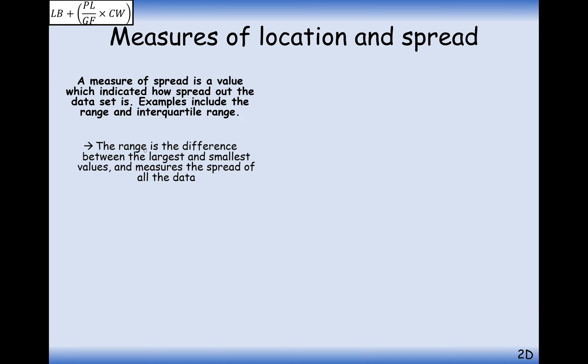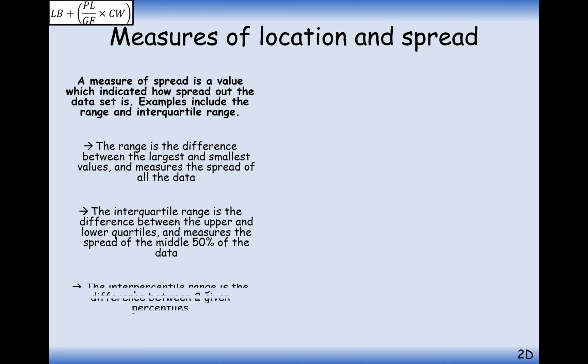So just to go through the basics here, the range is the difference between the largest and the smallest value and it represents how spread out our data is. The interquartile range however measures the difference between the upper and the lower quartiles and measures the spread of the middle 50% of data or the most average 50% of data. So it's a way of effectively measuring the spread of data without taking into account the outliers that can appear in our data.